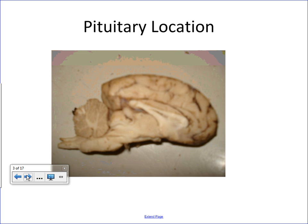The pituitary gland's location in the brain — this here is a dissected sheep brain. Essentially with this image, you've got the cerebrum, your corpus callosum, your cerebellum, your medulla, pons, and midbrain, and then your thalamus. Here would be about where an object called the optic chiasm is located.